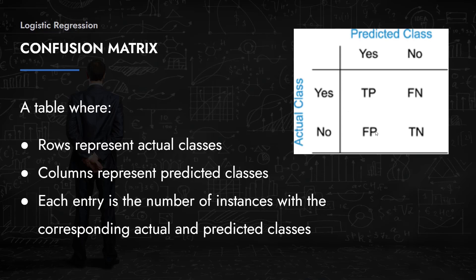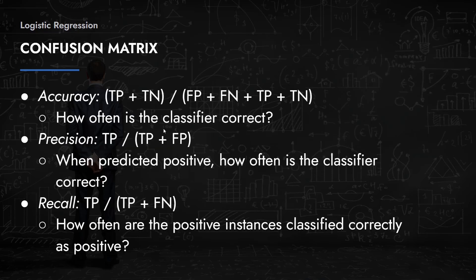The confusion matrix itself is a performance measure — not a single number, but a table that helps you interpret where a classifier's strengths and weaknesses lie. Whenever you build a classification model, print out the confusion matrix and understand what's going on. The performance measures in subsequent slides will be single numbers derived from it.